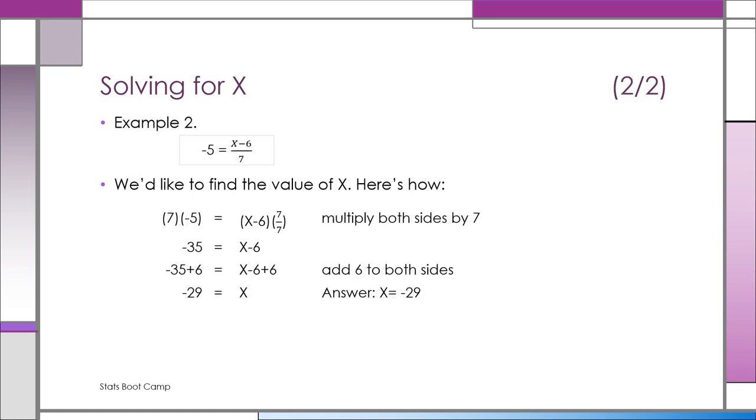In this problem we have minus 5 equals x minus 6 divided by 7. Multiply both sides by 7. Now you have x minus 6 on the right and minus 35 on the left. Add 6 to both sides. So now you have minus 29 equals x.